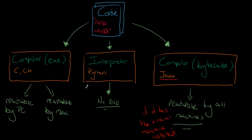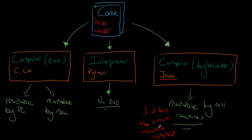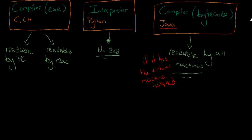So those are the three main ways to run code. To revise: you have a compiler, which creates a file that can be run again and again; the interpreter, where you always have to have the code and run it through the interpreter and it doesn't make a file on the other end; and the compiler that creates bytecode, which can only be run if that machine has a virtual machine — which is just another program on your computer.